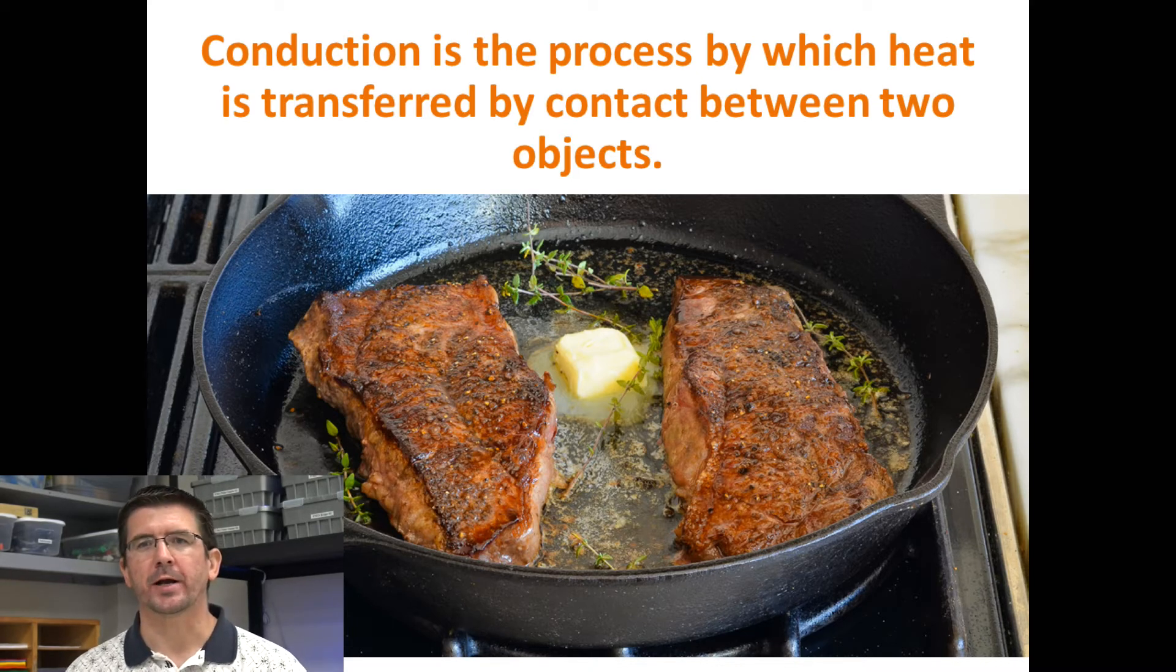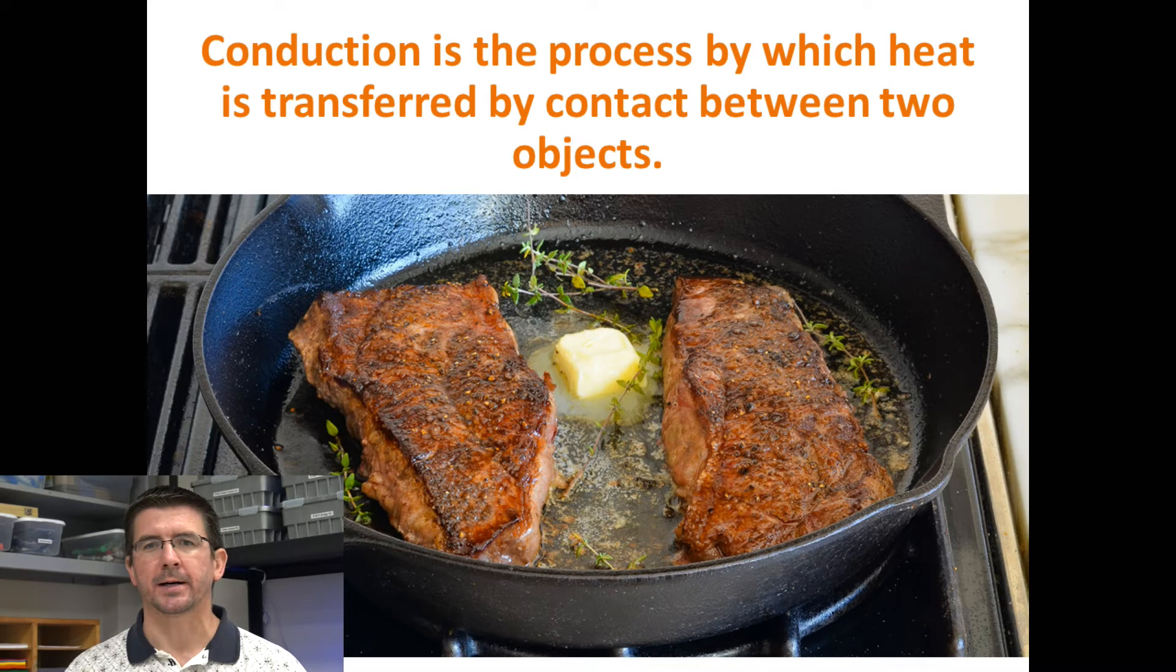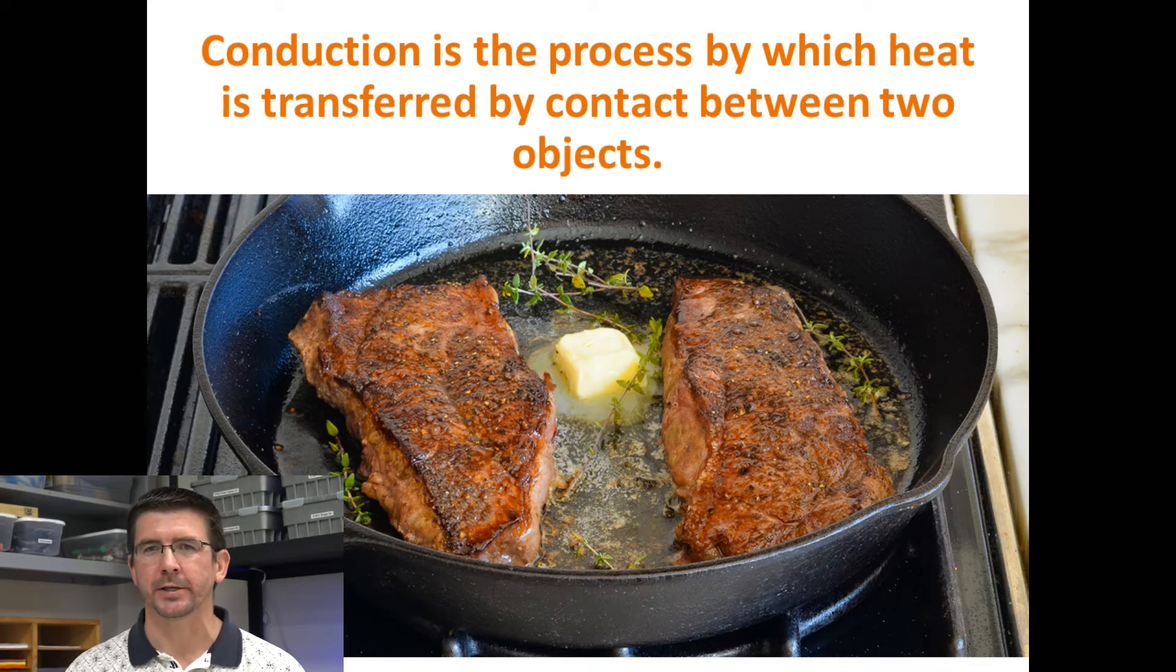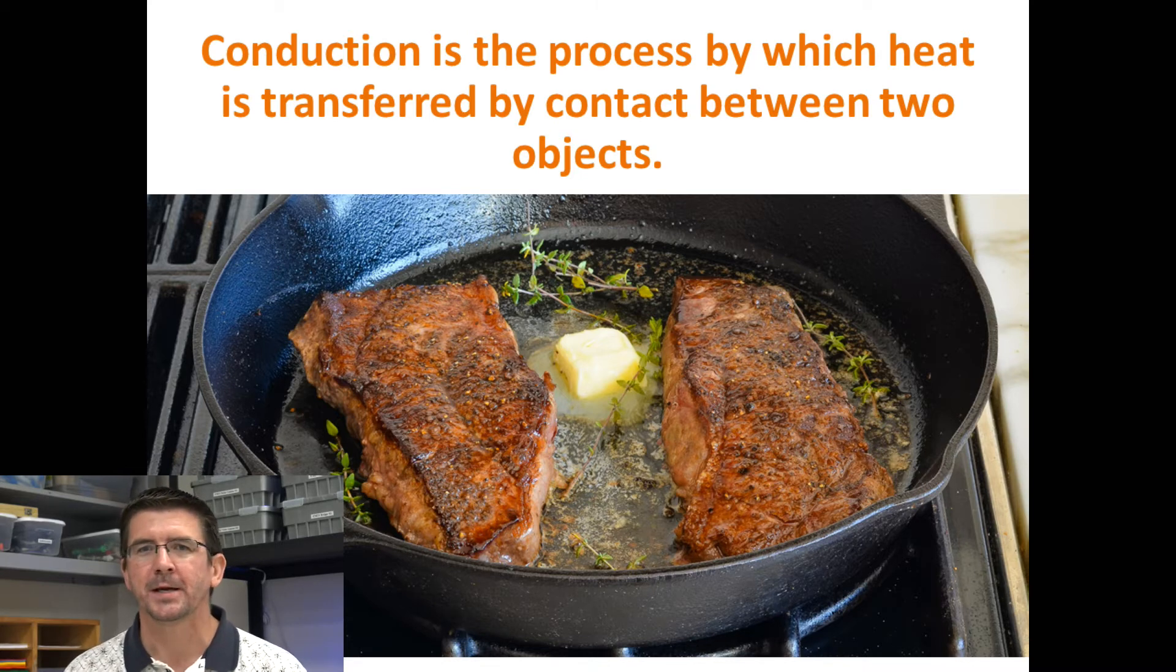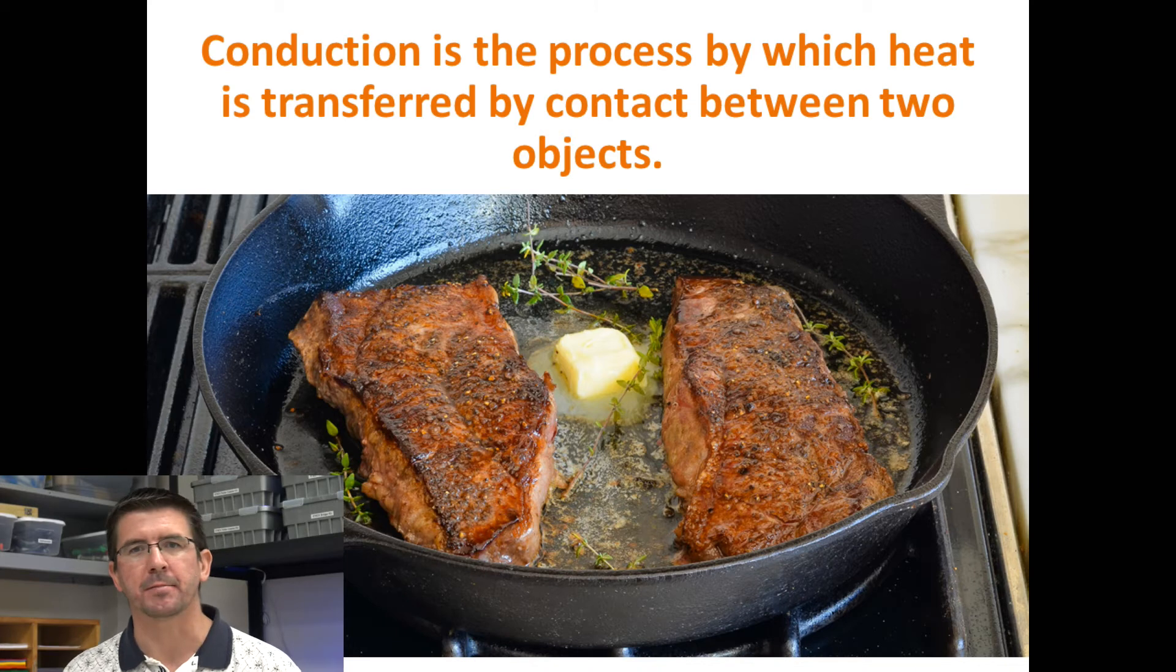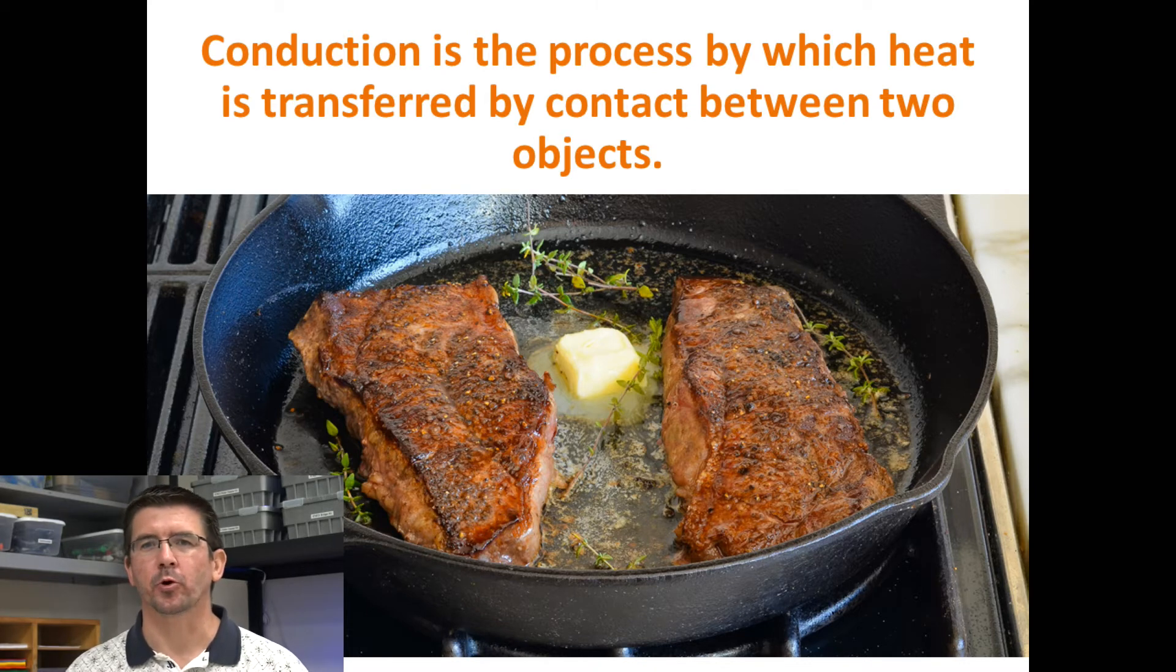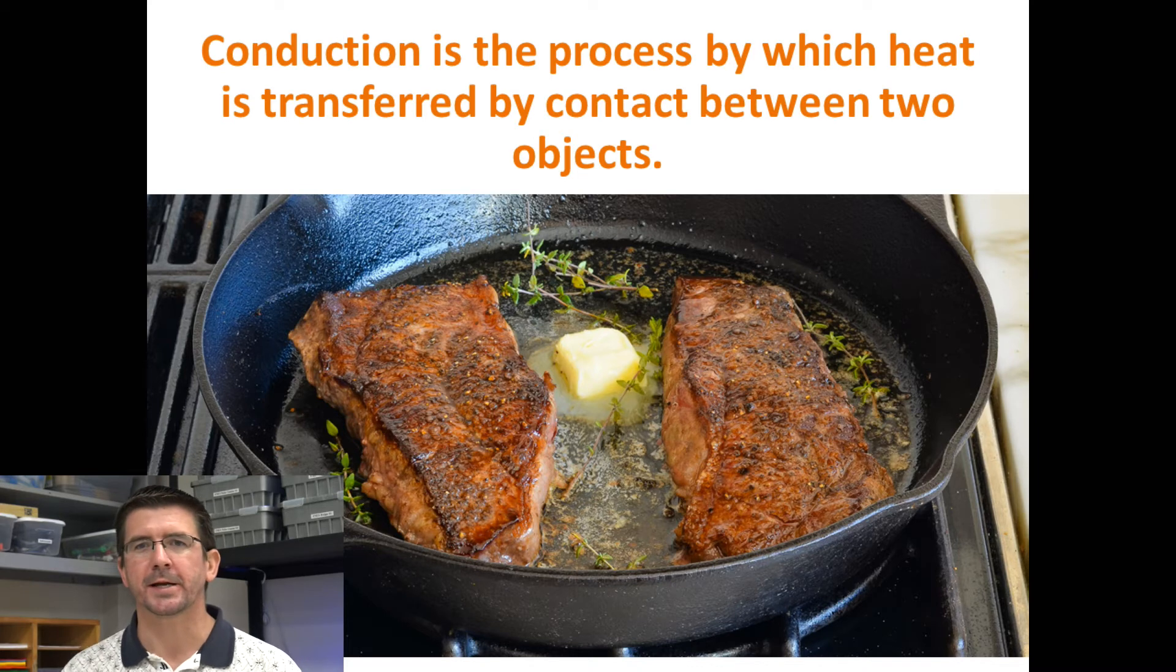So just like we saw a minute ago, when conduction happens the molecules in the hot pan are moving very rapidly. You put the steak in the pan, those molecules are moving more slowly, but through that contact the rapidly moving molecules start bumping against, bumping into those slow moving molecules just like the pool balls, causing them to move more rapidly, causing them to gain heat, to gain thermal energy. Essentially what's happening is the warm pan is giving some of its heat energy to the steak.